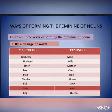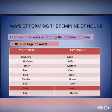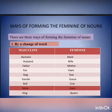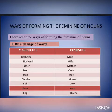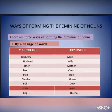The first way is by making a change of word. For example, 'bachelor' is a masculine gender; when we convert it to the feminine gender, we make a change of word. Similarly: husband/wife, father/mother, fox/vixen, stag/doe, gander/goose, bull/cow, horse/mare, king/queen. This is the first way of changing the masculine gender to the feminine gender — by a change of word.